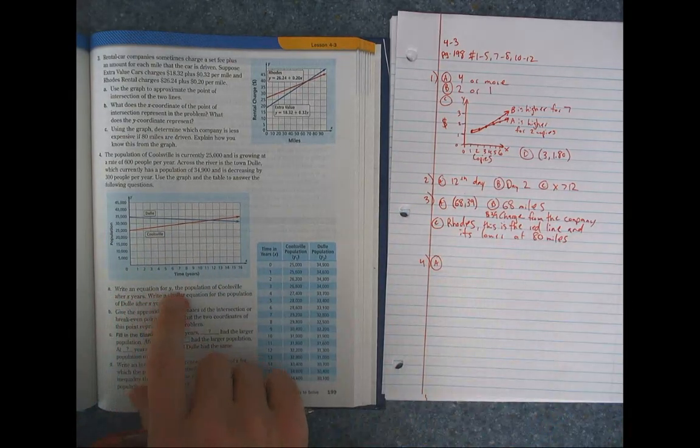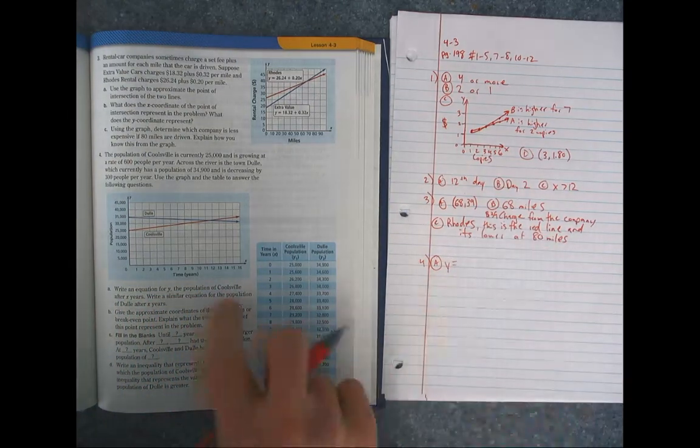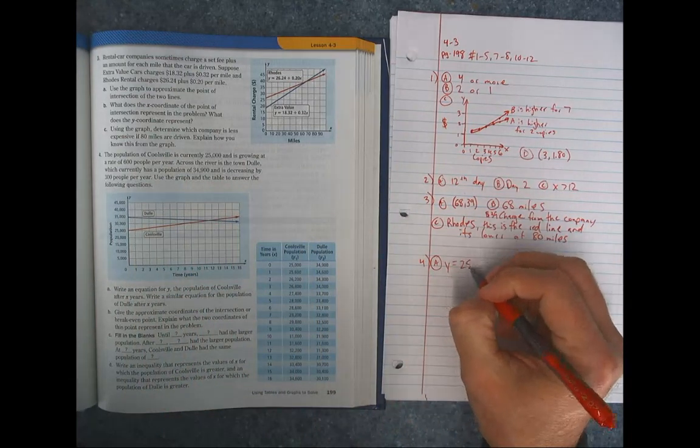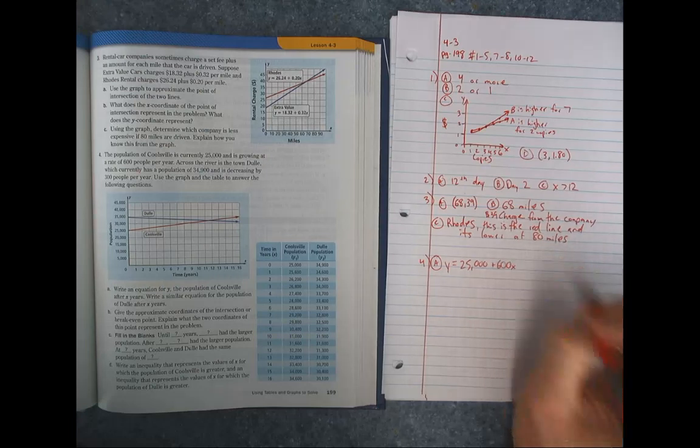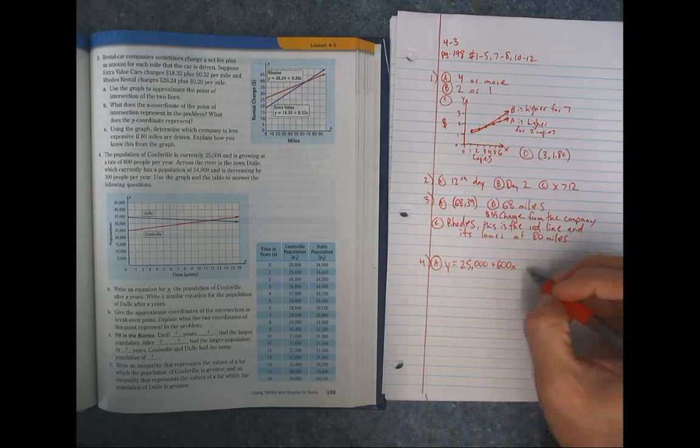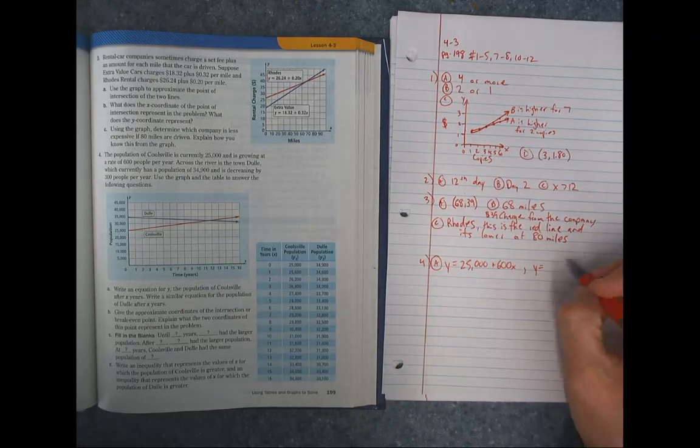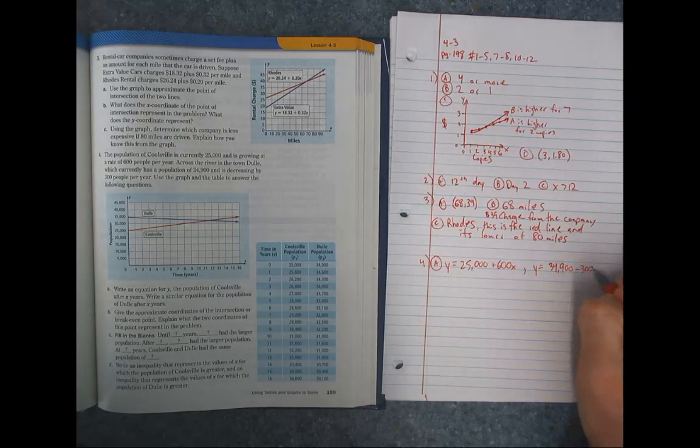Letter A. We're going to write an equation for Y, the population of Coolsville. So Y equals, population equals, after X here. So Coolsville is at 25,000. Then they're adding 600 per year. So 600X. And another equation for the other one. So Y equals. This one started at 34,900. And it's going down. So minus 300 per year.